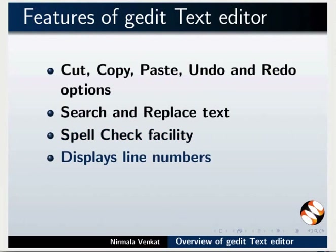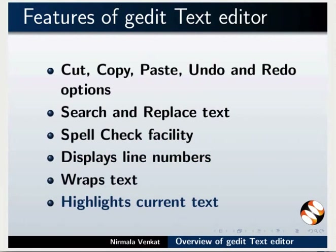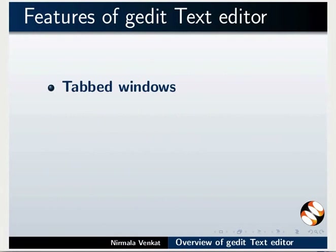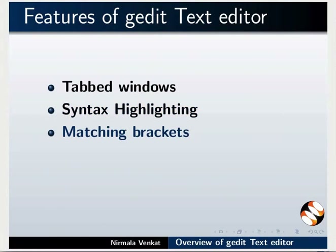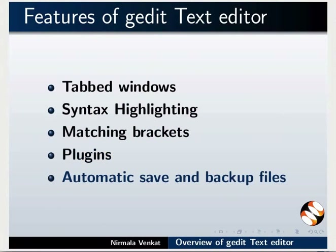gedit text editor has a spell check facility. It displays line numbers, which is very useful to debug the source code easily. It wraps text and highlights the current text. Tabbed windows feature makes it easy to work on several files in the same window. gedit text editor highlights the syntax in various programming languages. It keeps track of the open and closed brackets in the programs. Addition of new features is available through plugins.